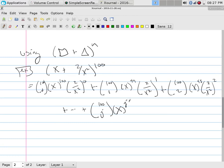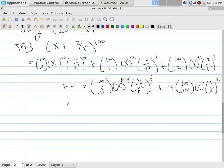Eventually any of these middle terms look like 100 choose j, x to the 100 minus j, and then 2 over x squared to the j, and then we keep on going down until we get 100 choose 100 and then x to the 0 and then 2 over x squared to the 100th power.